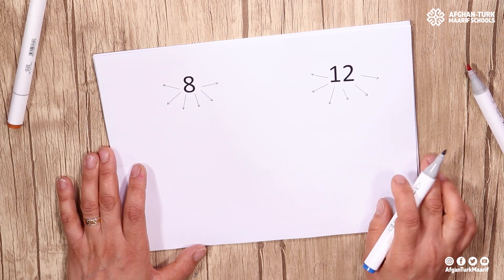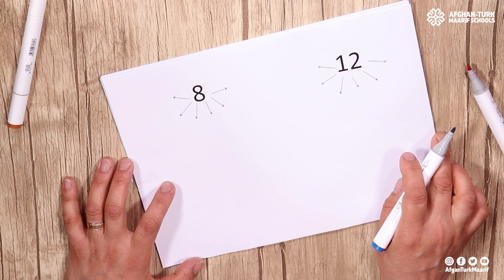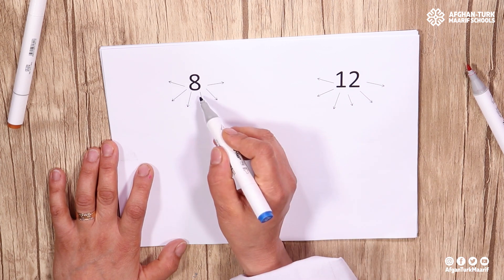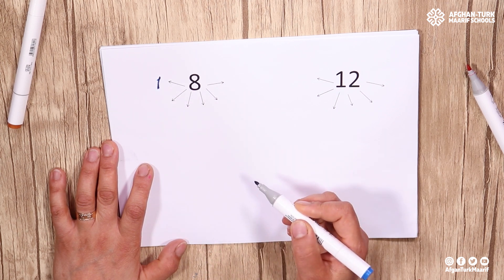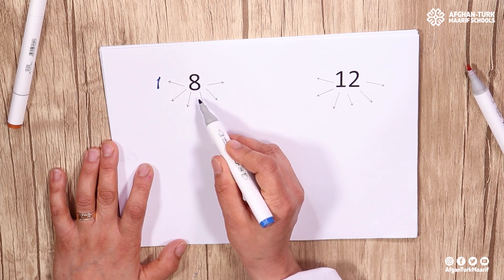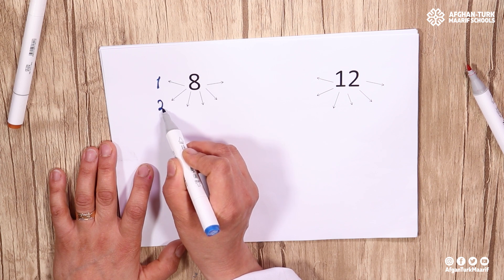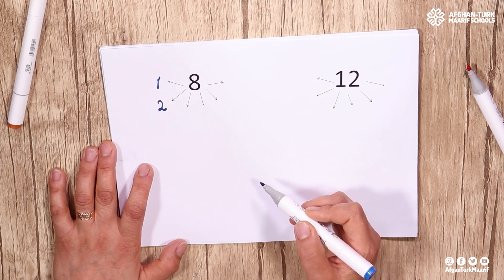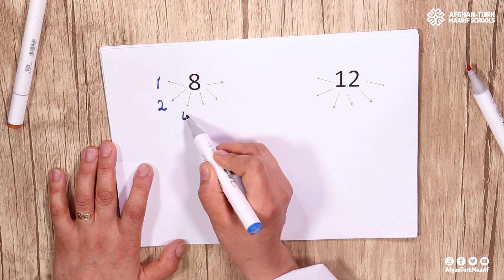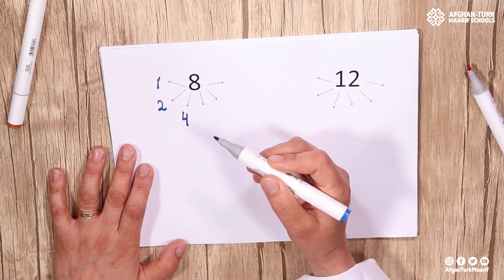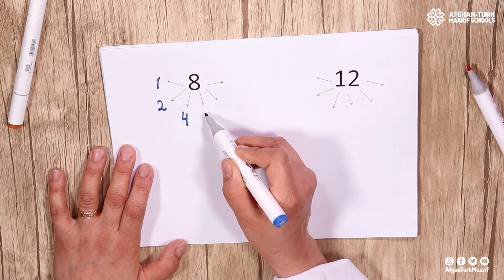Let's have a look at these examples. For example, numbers 8 and 12. Here we are going to find the factors of these numbers using divisibility rules as we studied before. The first factor of each number is always 1. 8 is an even number, so it's divisible by 2. 8 is not divisible by 3, but it's divisible by 4. It's not divisible by 5, 6, or 7.